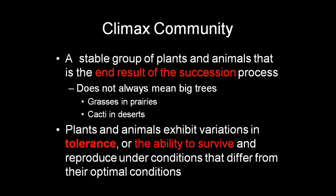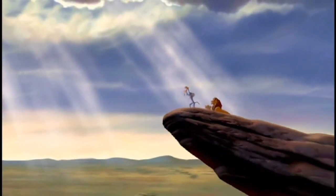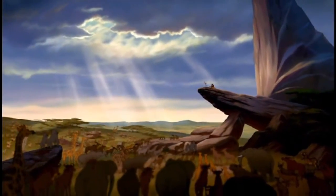The climax community is not always the biggest species in the area, but more the most dominant. In the prairies, grass is most dominant. In the desert, cacti is most dominant. These organisms can become the climax community because they have tolerance, which is the ability to survive and reproduce in conditions that are not optimal for their survival. They continue to survive because they don't need no man.